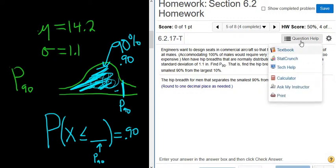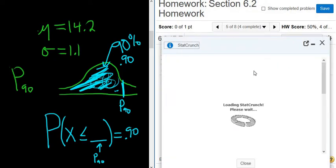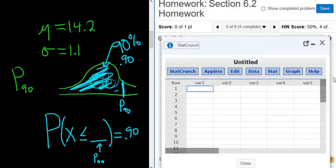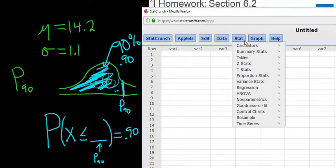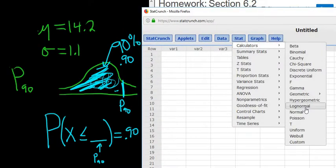We'll go to question help and then to StatCrunch. It's less than because it's shaded to the left. A cheap trick is you can always just use less than for percentiles. So if it was P50, it'd be the same thing except you put 0.5 where the 0.9 is. So you go to Stat, Calculators, Normal.